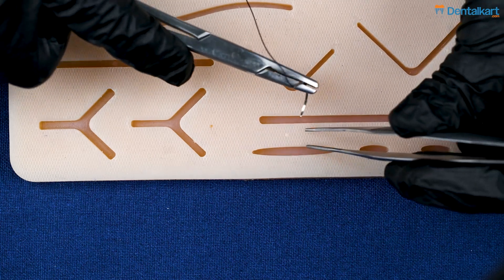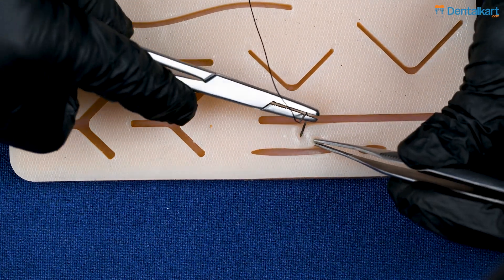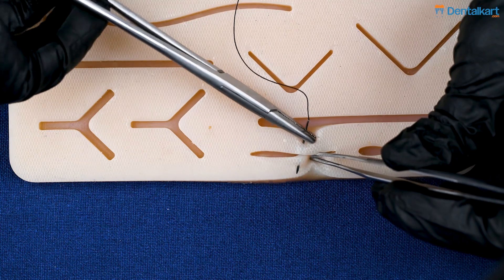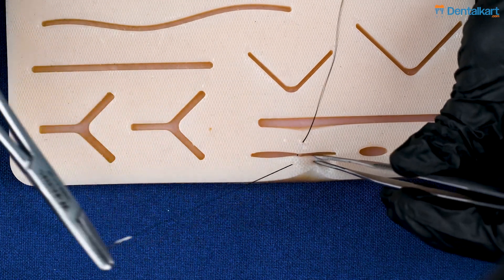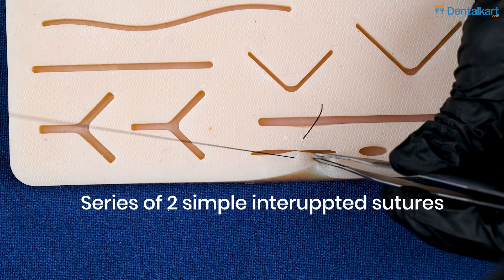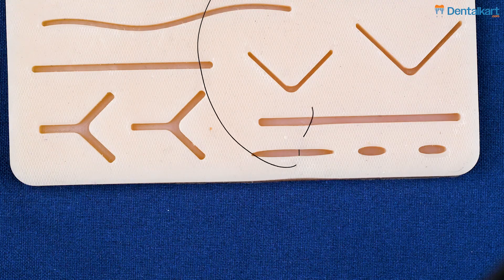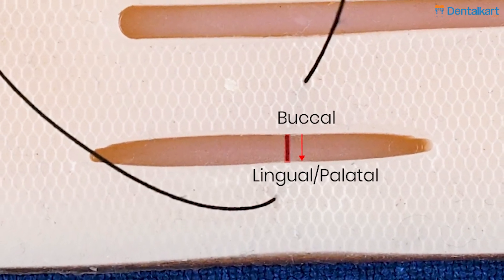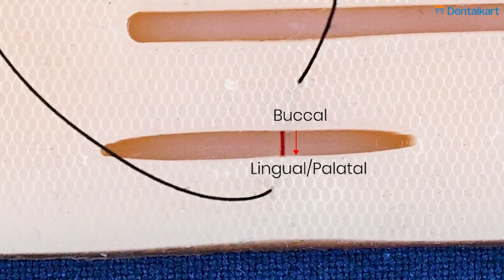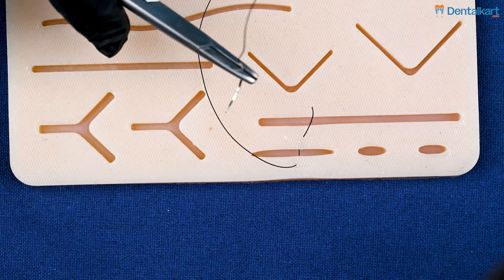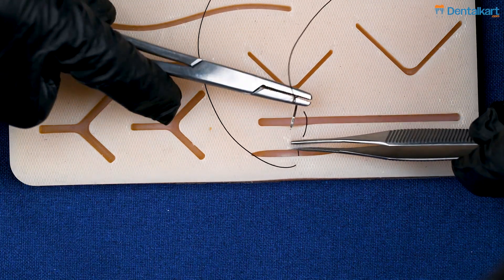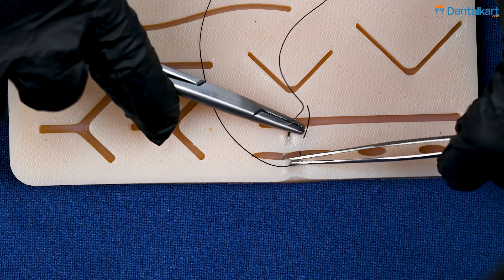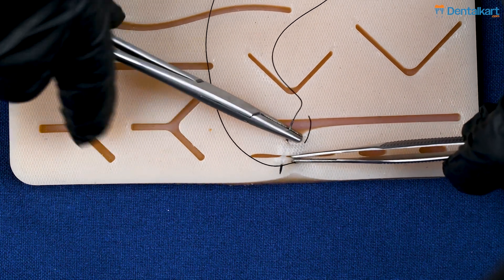It's a distinct suture which allows you to achieve great approximation of the tissue using a series of two simple interrupted sutures. Basically, your needle passes from the buccal to the lingual or palatal direction, and then you move the needle back without engaging any papillae, and move it again in a buccal to lingual direction, as you can see here.